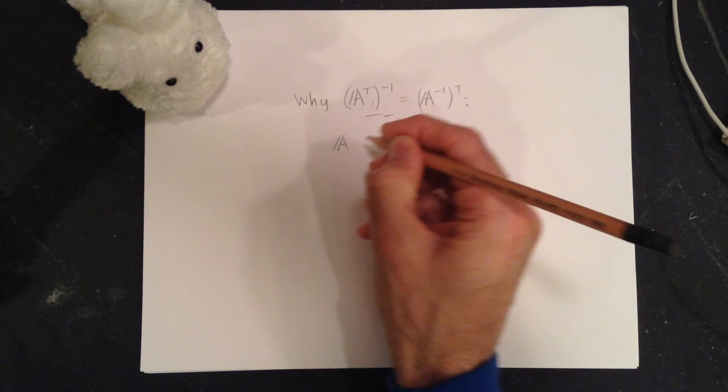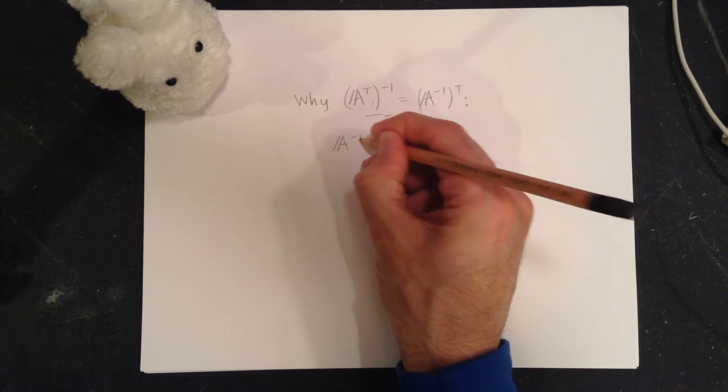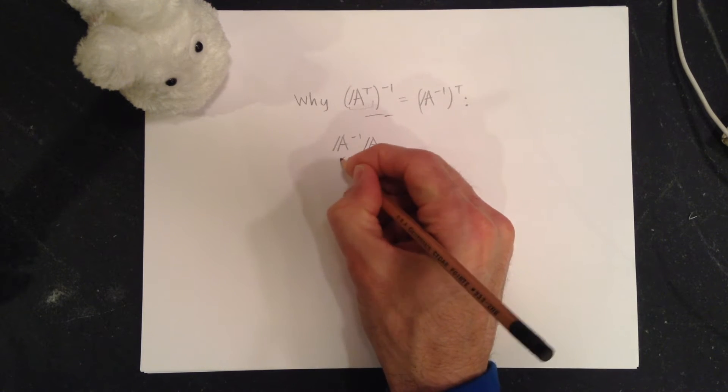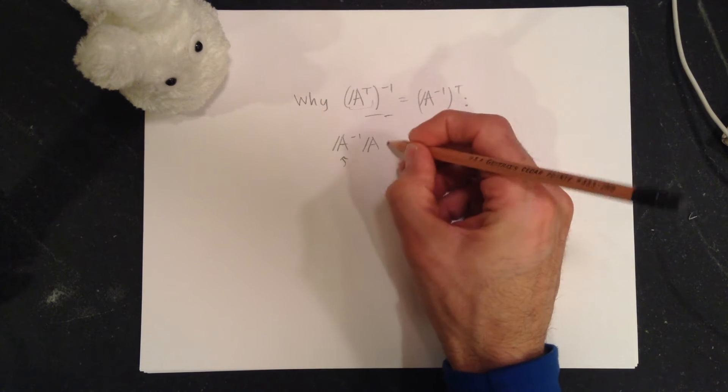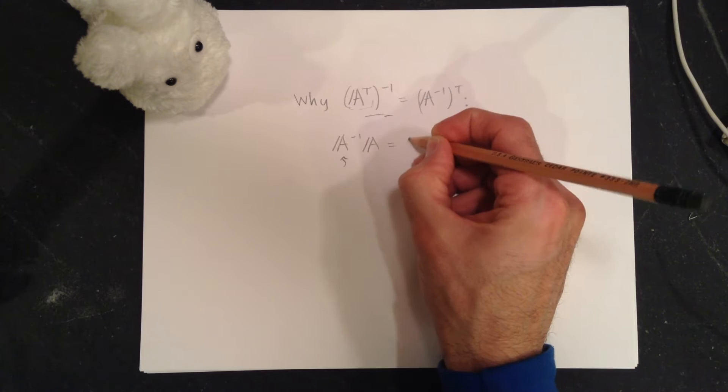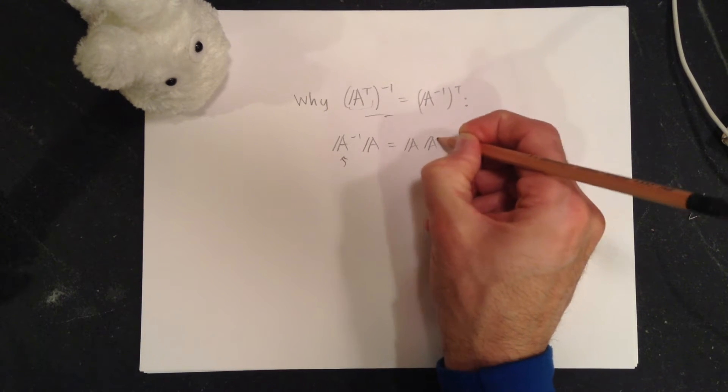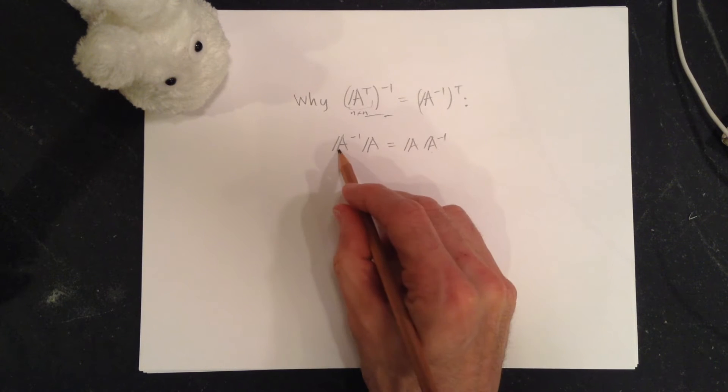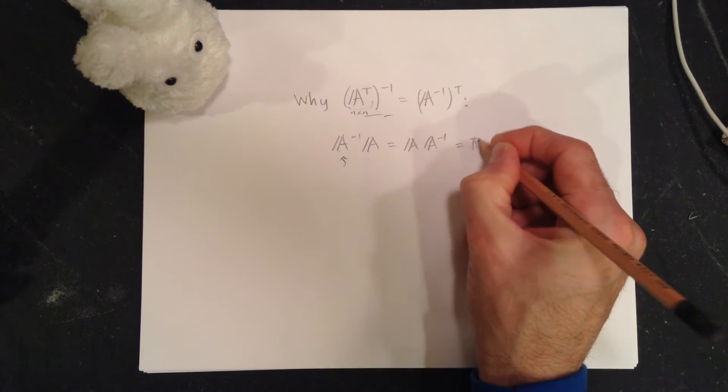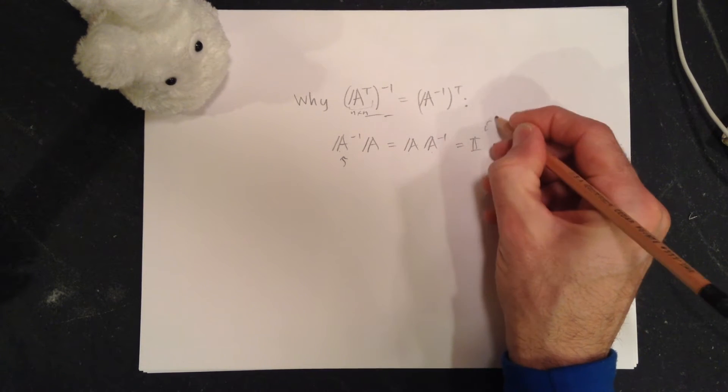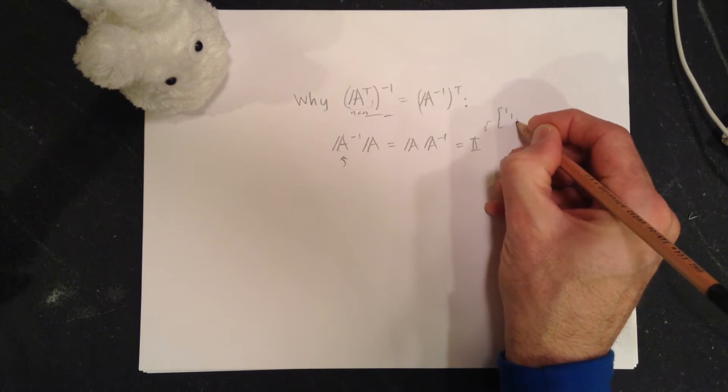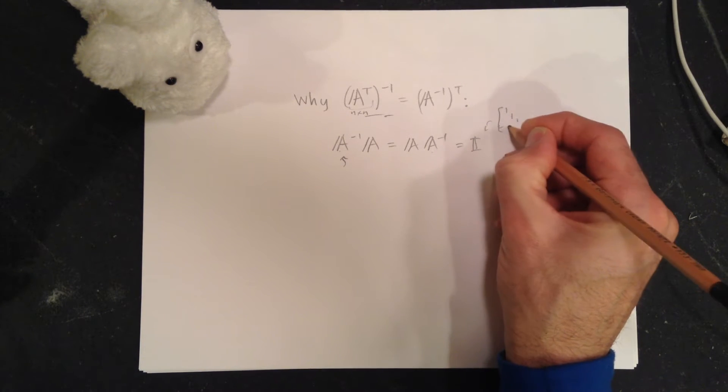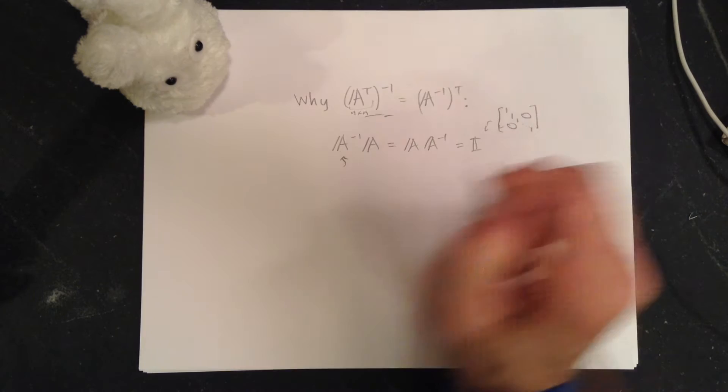Start off with the basic story of the inverse. It's the very special matrix that pre-multiplies or post-multiplies A. These are n by n's. Do it here or here, and you get the identity, which is our most excellent one when it comes to multiplication of matrices.